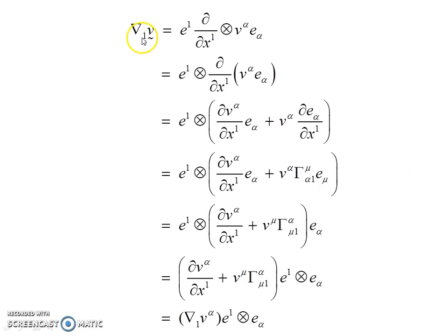So first covariant differentiation in direction 1, del V, this operator, tensor product here. When we do that, the product rule operates here, and so the derivative of the component times the basis vector, plus the component times the derivative of the basis vector.